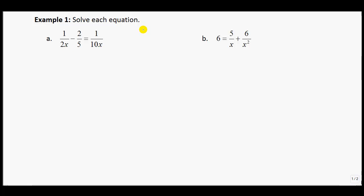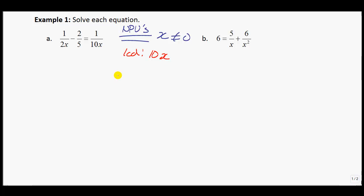Example 1a — solve each equation. First, figure out the NPVs. Looking at the three denominators, x cannot equal 0. Now for the LCD: what number do 2x, 5, and 10x all go into? We're looking for a number that 2, 5, and 10 go into — that's 10 — and then we take the highest exponent, which is x. So the LCD is 10x.